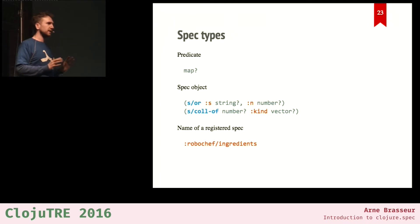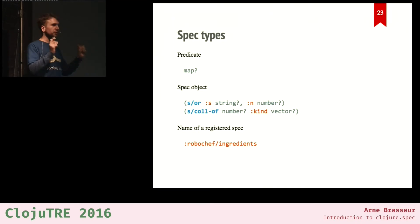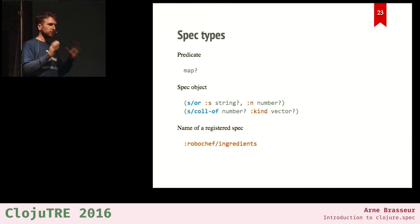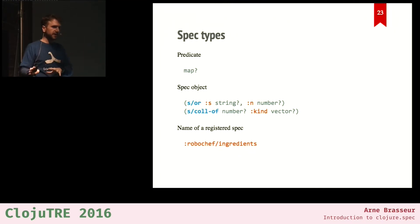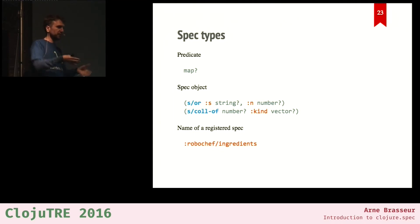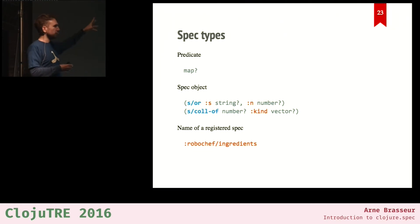All functions that take a spec can accept one of three things. The smallest building block is a predicate — just a function that returns a truthy or falsy value. Given those predicates, you can start combining them using functions that spec provides: s/or, s/and, collections of something matching a predicate, and so on. If you register a spec with a fully qualified name, you can then use that name wherever you would use a spec.